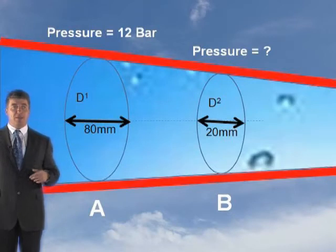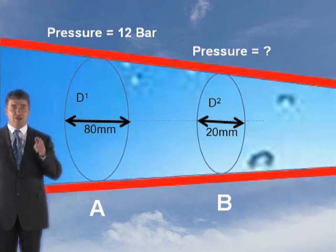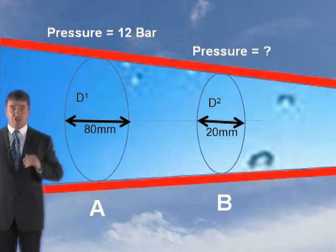Put a point A, put a point B. At point A, 80mm diameter, pressure's 12 bar. Point B, diameter 20mm, pressure you don't know. That's what you're trying to work out. Do you understand the situation?